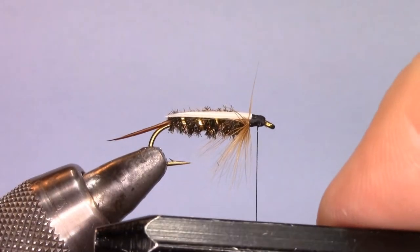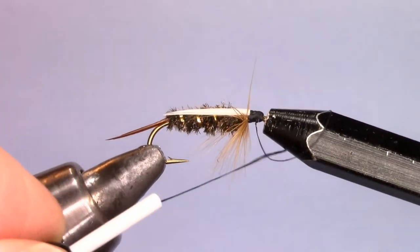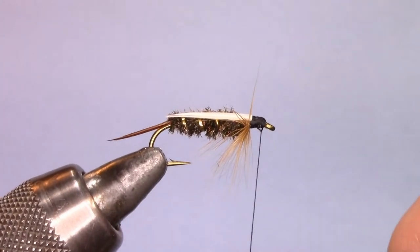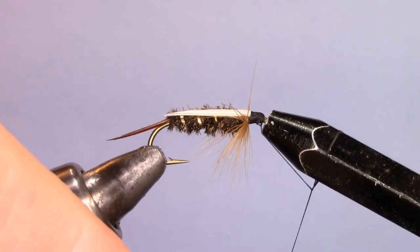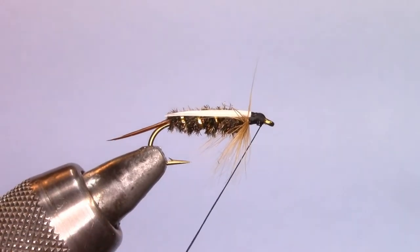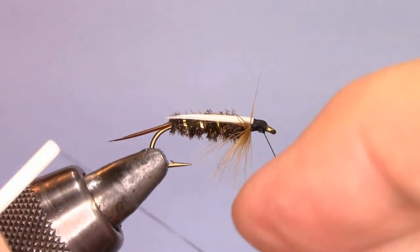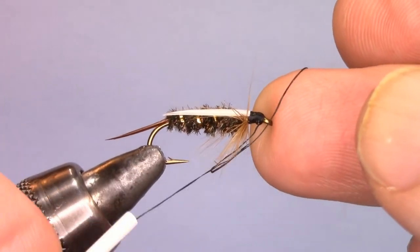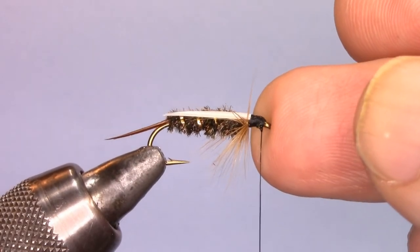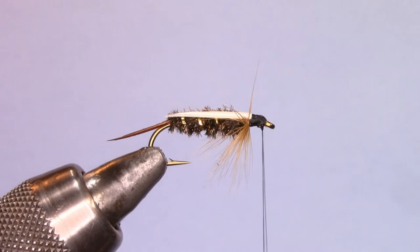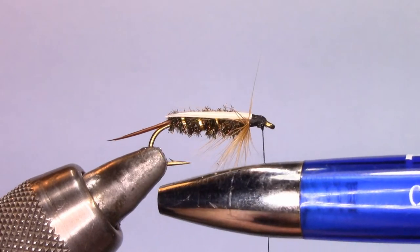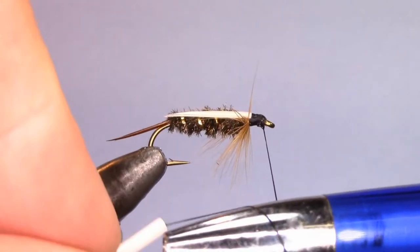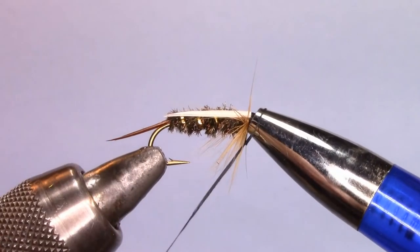Others use the half hitch knot to finish your fly. You can either use the half hitch tool or you can use your finger. And if you don't have a half hitch tool, you can use a ballpoint pen.